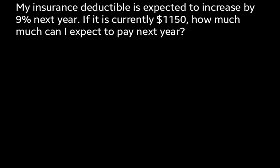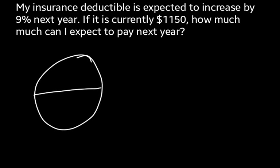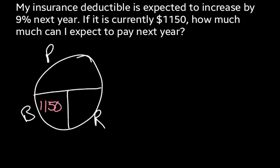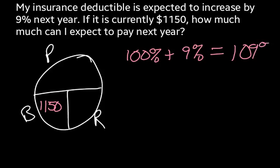Another question says: my insurance deductible is expected to increase by 9% next year. If it is currently $1,150, how much can I expect to pay next year? Drawing my PBR circle with portion, base, and rate — $1,150 is my base, because that's what I'm currently paying, my original amount. There's going to be an increase of 9%, meaning next year I'll be paying 100% of what I currently pay plus 9 more percent. So in total, next year my deductible is going to be 109% of what it is today.